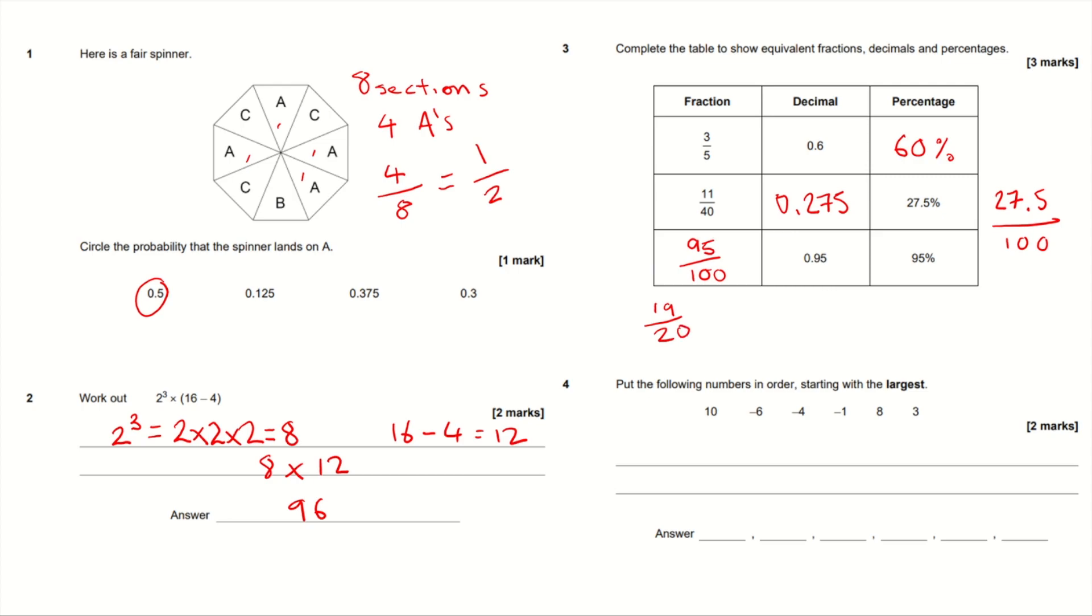Question 4. Put the following numbers in order, starting with the largest. Now the reason for this question is to make sure that we understand how negative numbers work. So we'll start with the largest, which is 10, and then we go down to 8, and then 3. Now the next largest number is minus 1. So the bigger the number on a negative number, the smaller it actually is. We get minus 4, then we get minus 6.